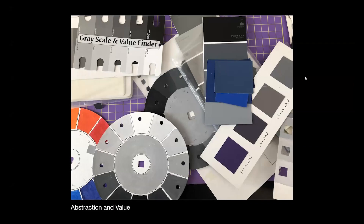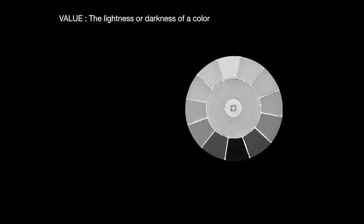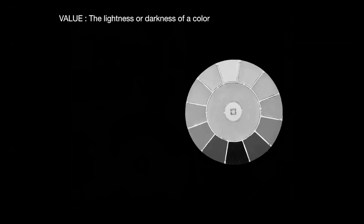This month, as part of our Art Focus on Abstraction, we're talking about value. Value is defined as the lightness or the darkness of a color. Here you see a gray wheel that I painted, and each of the grays on this represents a gray on that continuum from white to black, which is how we get the gray scale.